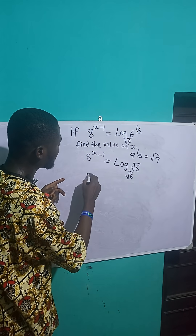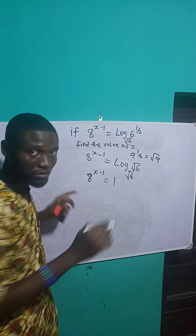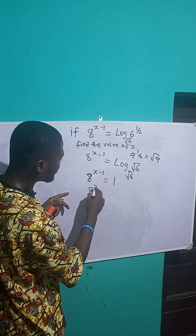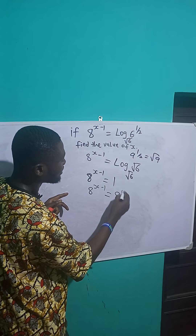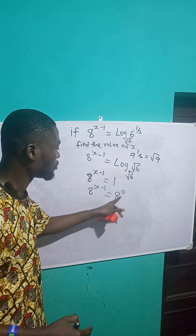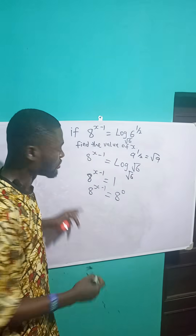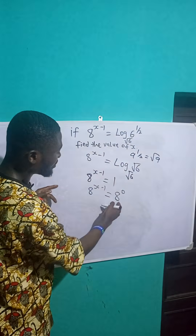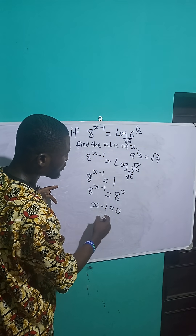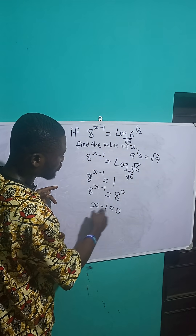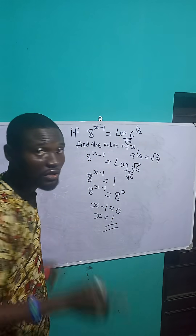So this means that a raised to the power x minus 1 is equal to 1. I can write this as a raised to the power x minus 1 is equal to a raised to the power of 0, since any number a raised to the power of 0 is 1, from the laws of indices. On the same basis, I equate the exponents, so x minus 1 is equal to 0. Transposing minus 1 to the left hand side, x is equal to 1.